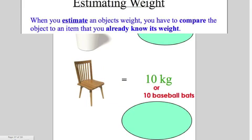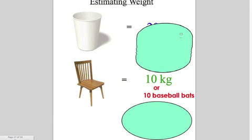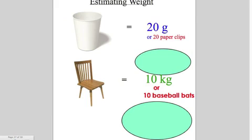Let's estimate the weight of a paper cup. A paper cup weighs about 20 grams or 20 paperclips.